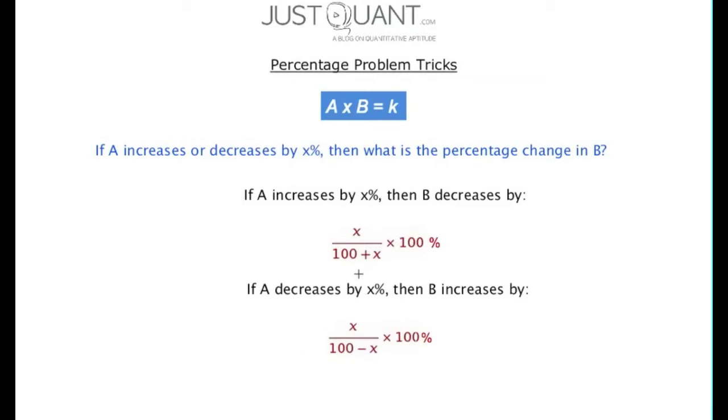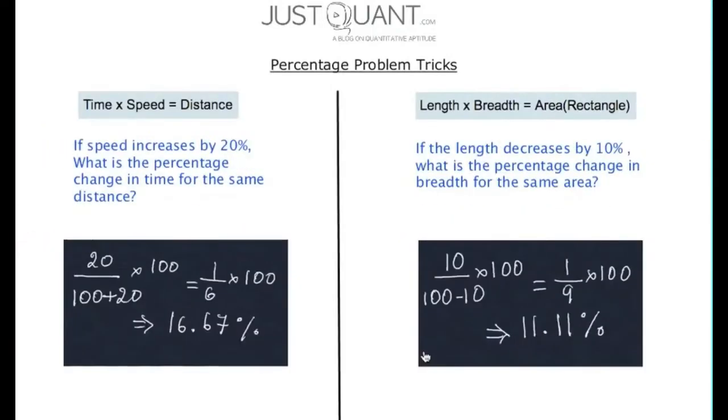When A is more than B by x%, B is less than A by x/(100+x) × 100%. And when A is less than B by x%, B is more than A by x/(100-x) × 100%.